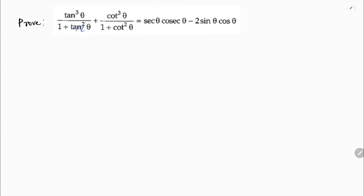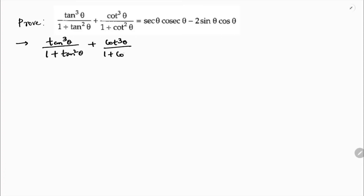Prove: tan³θ / (1 + tan²θ) + cot³θ / (1 + cot²θ) equals secθ·cosecθ minus 2sinθcosθ. So the LHS is tan³θ by (1 + tan²θ) plus cot³θ by (1 + cot²θ).